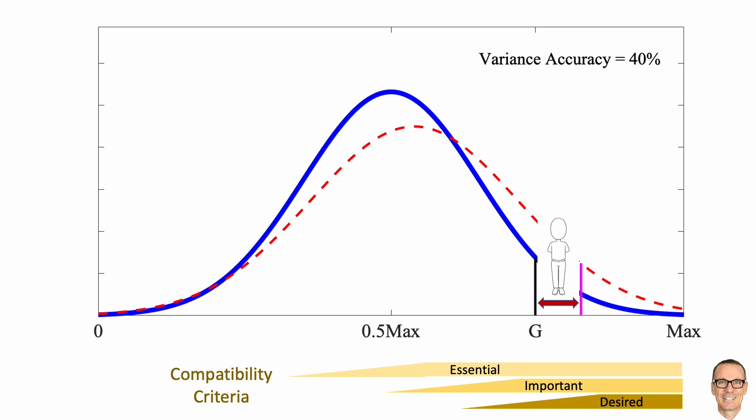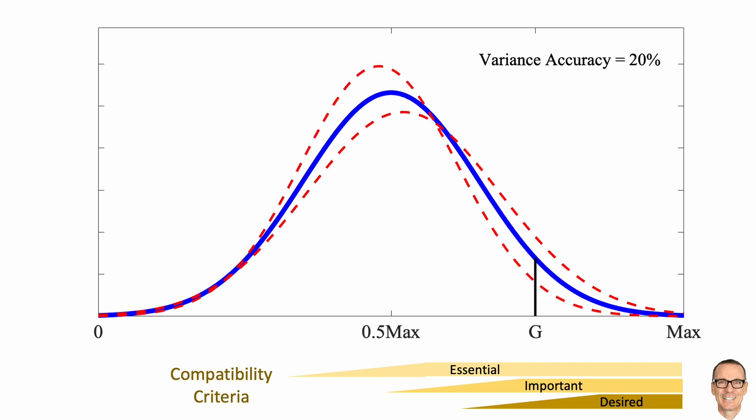So perhaps we want to be a bit more accurate than 40%. Let's choose 20%. It's a trade-off because the more accurate you want to be, the more people you are going to need to assess. So using the formula we have here, it tells us that you would need to assess 52 people to get a 20% level of accuracy in your measured curve.